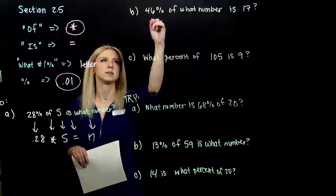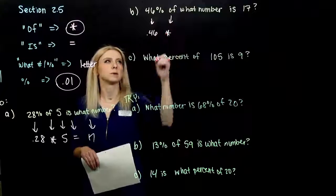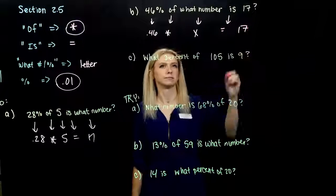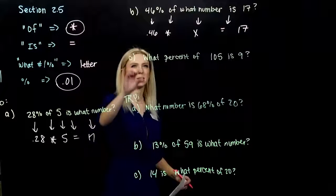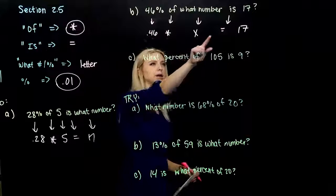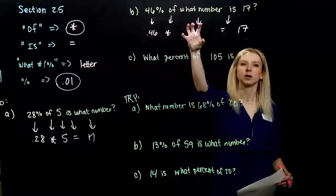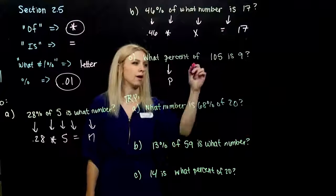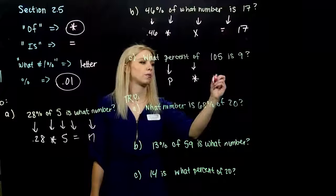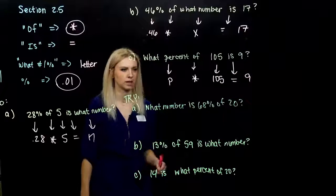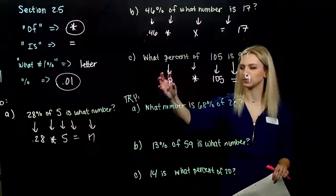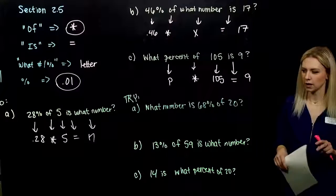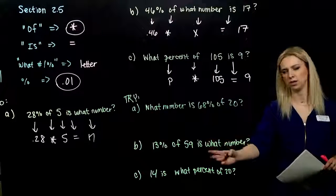We'll break down some more. 46%. Again, in an equation, it needs to be in decimal form. 0.46. The word of means multiplication. What number? Some unknown. I'm going to call it X. Is 17. So, if I took that sentence away from you, you should be able to still tell me I'm looking at 46% of some number is 17. We're trying to figure out what number makes that true. Last. Again, what percent? I'm going to call it P. Percent. Makes sense. Of. What percent of 105 is 9? Again, if I took the sentence away from you, you should be able to ask what number, or what percentage, or what quantity of 105 is 9?